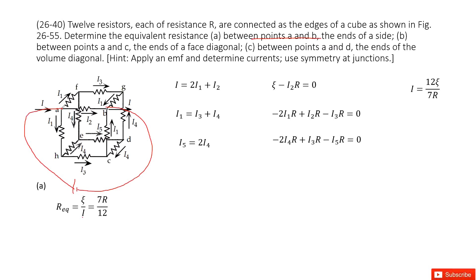First, we look at position A. The current entering is I, and the current leaving is I1 plus I2. Then we look at position F: the current entering is I1, and the current leaving is I3 plus I4.